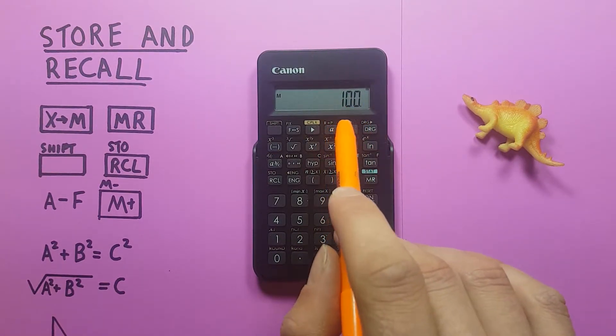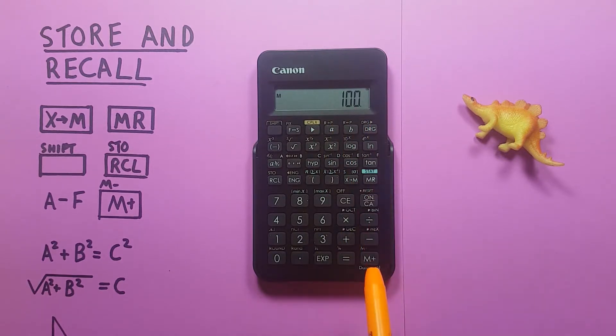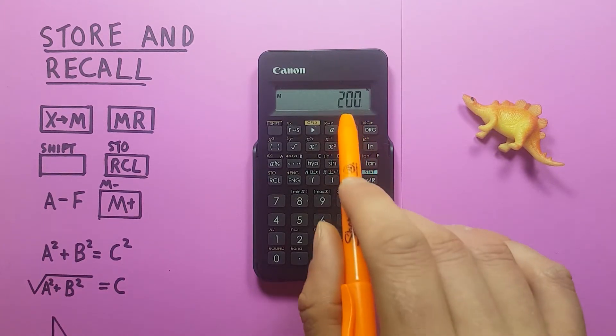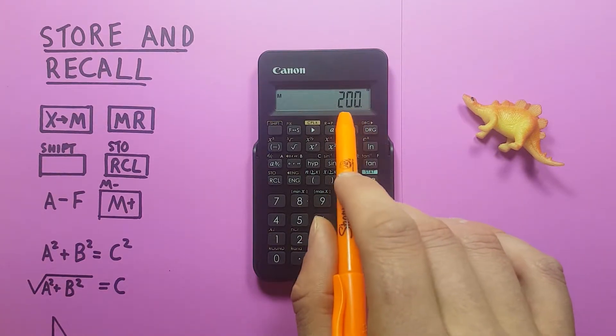We can also add or subtract numbers to this with the M plus key, so if we want to add 100 to it we can then press M plus and then MR and we see our memory has now become 200.